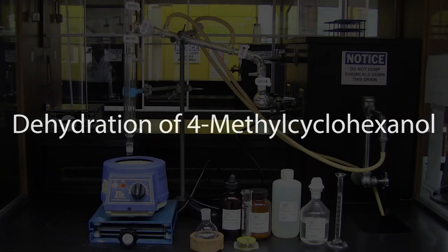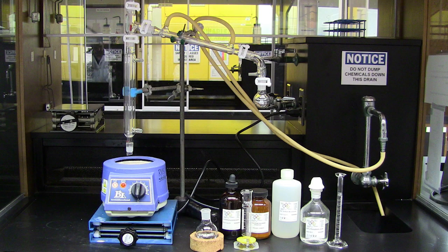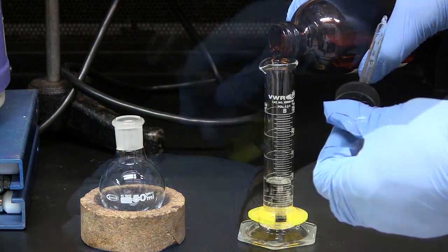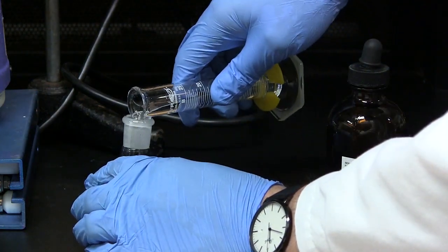In this experiment, we'll perform a dehydration of 4-methyl-cyclohexanol. Measure out 150 millimole of 4-methyl-cyclohexanol and add it to a 50 ml round-bottomed flask.